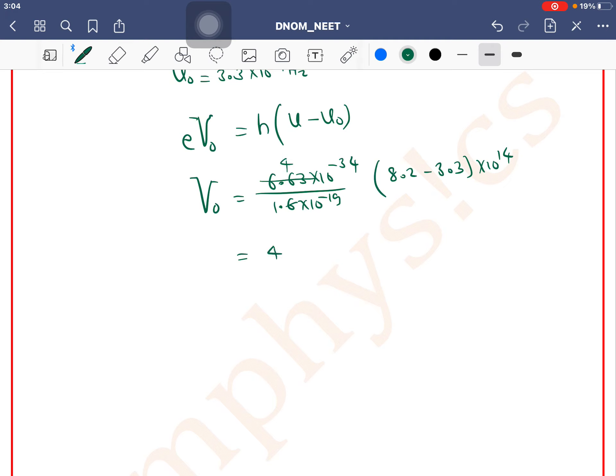as (6.63 × 10^-34)/(1.6 × 10^-19) × (8.2 - 3.3) × 10^14. This can be written